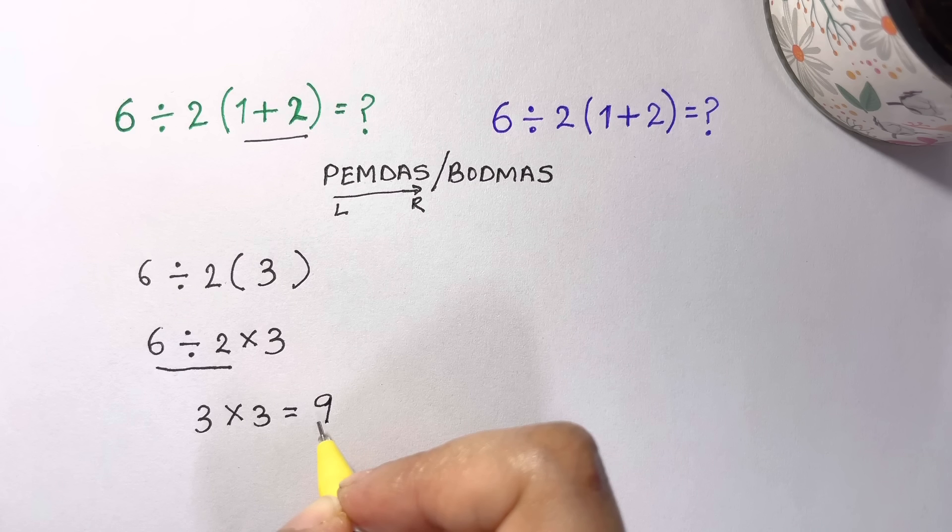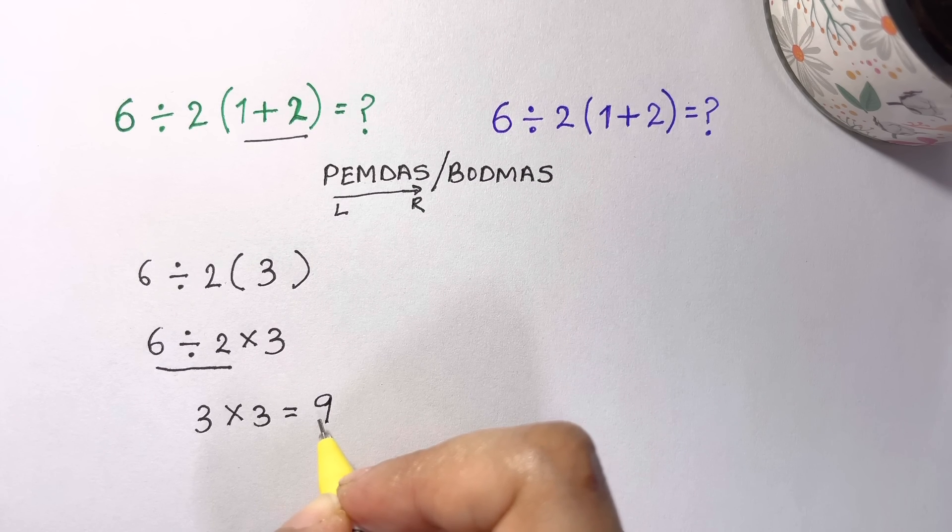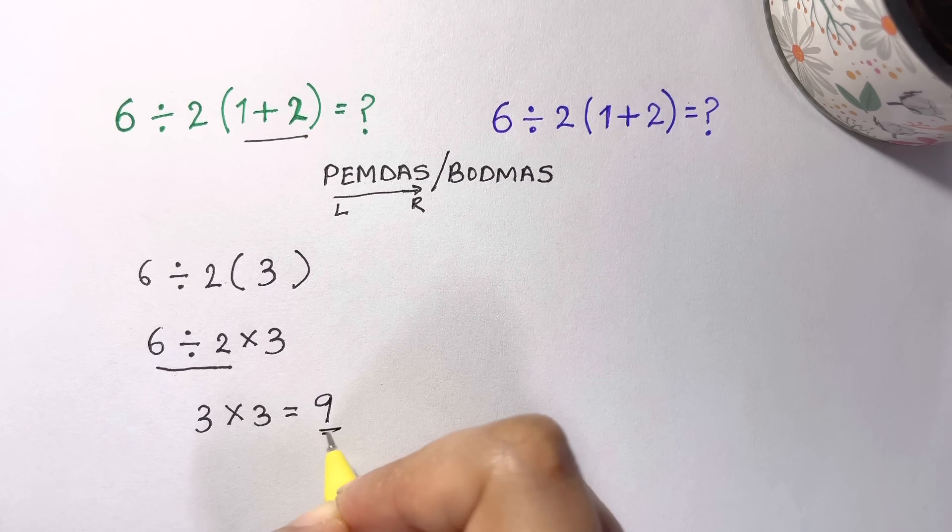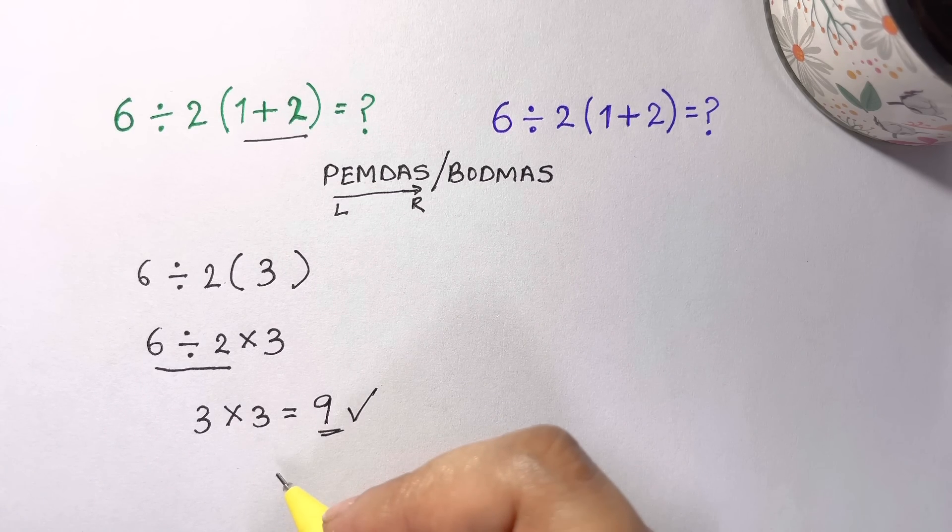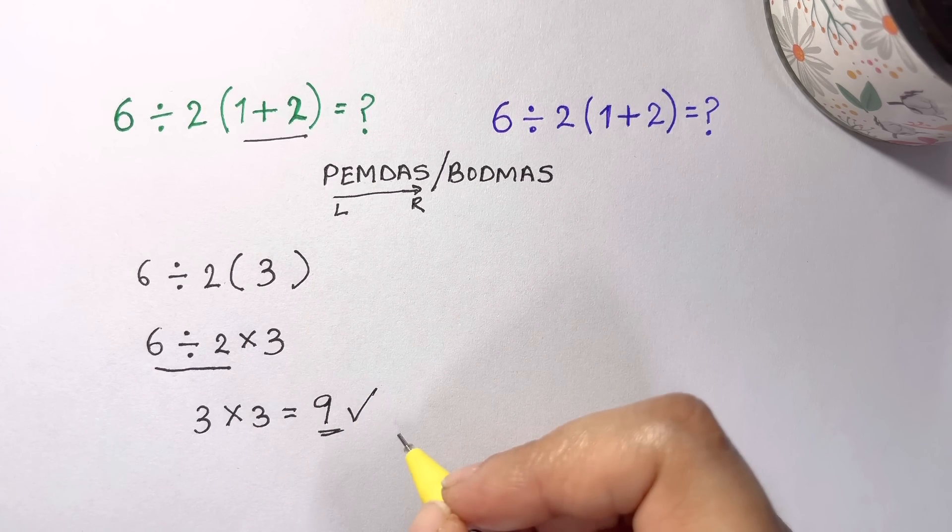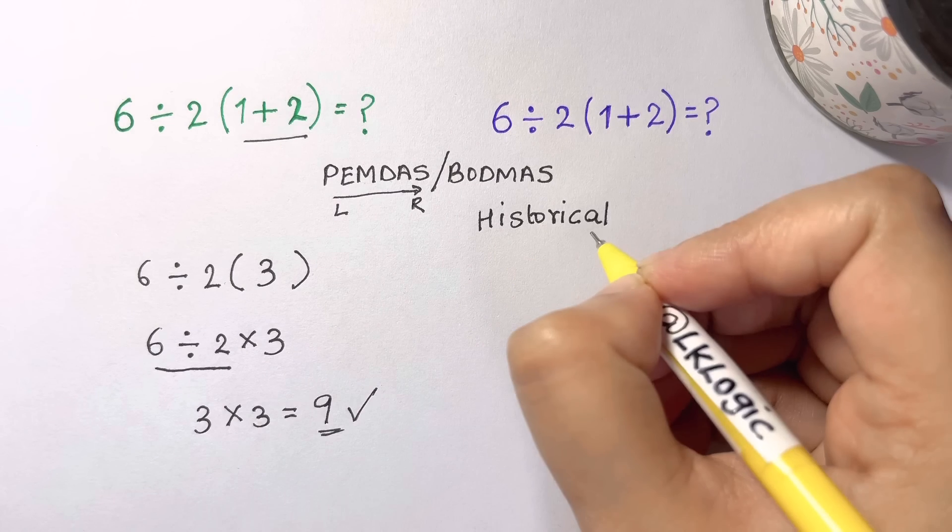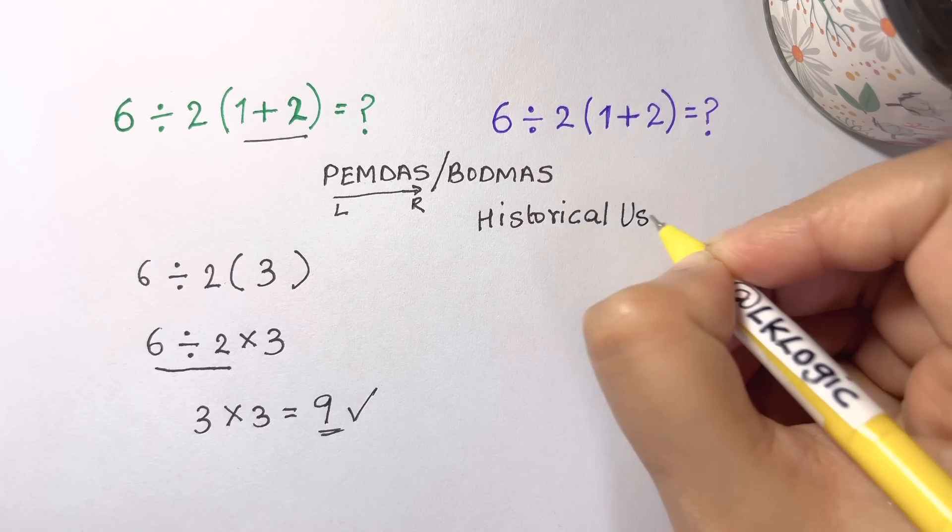So the one final multiplication is equal to nine. That gets us to the correct answer of nine. That's according to the modern usage of order of operations. So why did the problem cause so much controversy? Well, there's another answer from historical perspective.